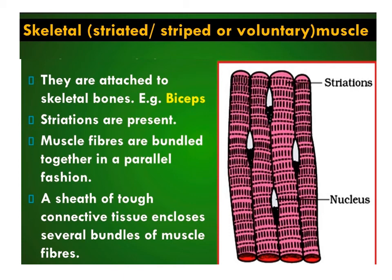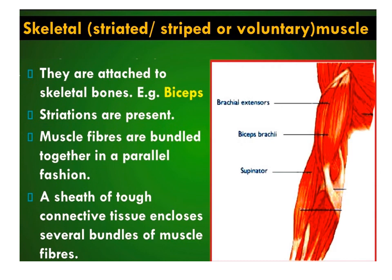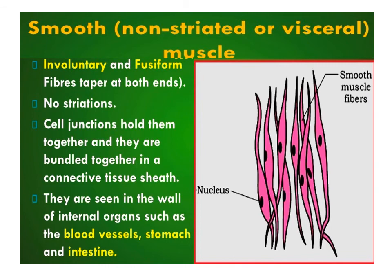Skeletal muscles are closely attached to skeleton bones and consist of long, cylindrical, multinucleated fibers. They have a striated appearance and hence are called striated muscles. The skeletal muscle fibers are bundled together in a parallel fashion and several bundles are covered in a sheet of connective tissue. For example, the biceps in the upper arm. The activity of skeletal muscles is under voluntary control, hence they are called voluntary muscles.